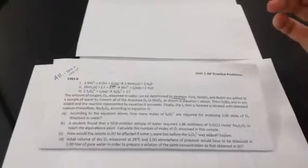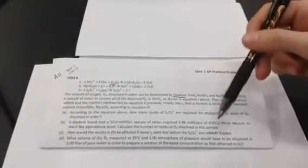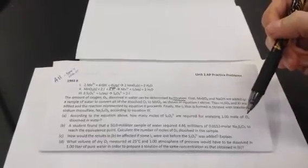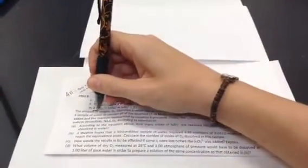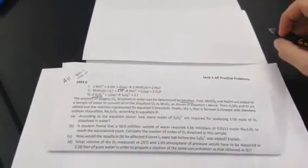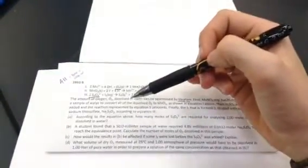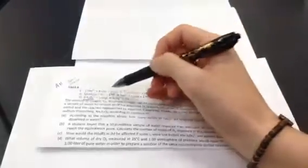What we want to figure out in letter A is how many moles of thiosulfate are required for analyzing one mole of oxygen dissolved in water. So I'm looking for moles of thiosulfate from moles of oxygen. I'm going to need to use some mole ratio conversion factors to get here. So I find what is common in both of these. I can't go right from equation one to three, so I can look and say, alright,